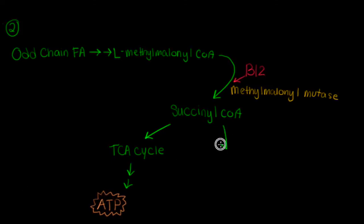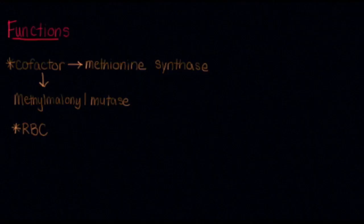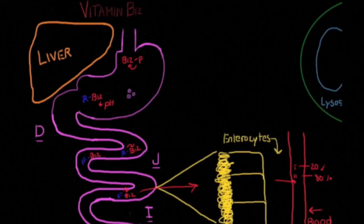Succinyl-CoA can also be used in a condensation reaction with glycine to make red blood cells. Today we've looked at two main functions of vitamin B12, its absorption, and digestion.